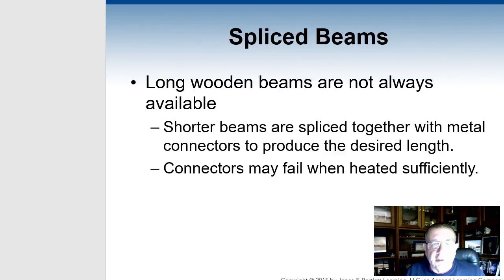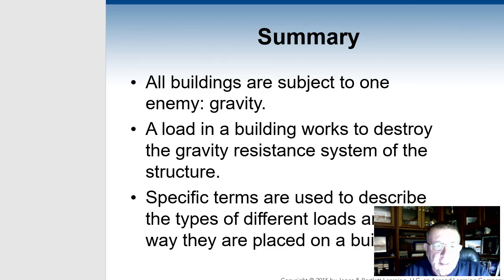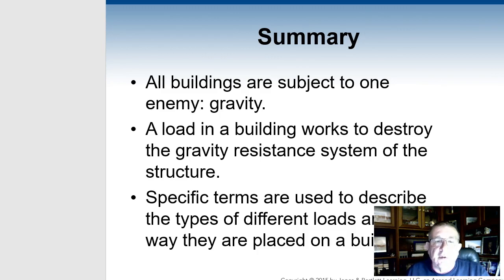Overhangs and drop beams are important. Then you have splice beams — how they splice two beams together. That brings us to the summary of the chapter. I'm going to load this into the assignments tonight so you've got it to go through. Read chapter two thoroughly — thank you all.